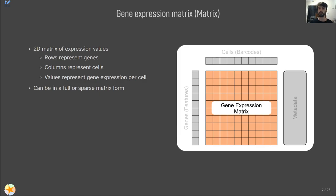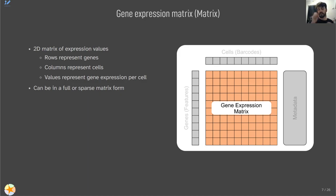Every individual value in the matrix is going to be a gene expression value for a specific cell and gene. These matrices can be stored either as a full or a sparse matrix. A full matrix stores every single value. However, a lot of values in this matrix can be zero or null, so in order to compress it further we can use a sparse matrix, which gets rid of those empty values and makes the matrix smaller and easier to store.